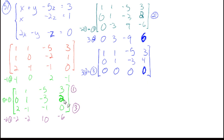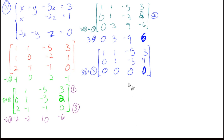If we had gotten 0, 0, 0, 6, that would mean nothing on the left equals 6 — no solutions. But 0, 0, 0, 0 means nothing equals nothing, which is true. Going to reduced row echelon form: our first nonzero entries are already 1, with 0s below. To eliminate the entry in row 1, column 2, multiply row 2 by negative 1: 0, negative 1, 3, negative 2 (corrected). Add to row 1: negative 1 plus 1 is 0, 3 plus negative 5 is negative 2, and negative 2 plus 3 is negative 1.